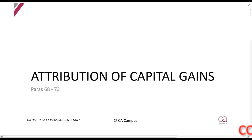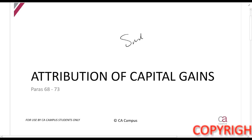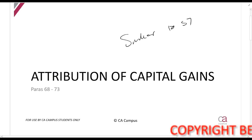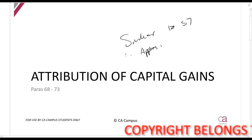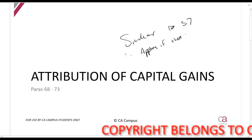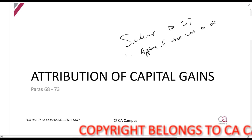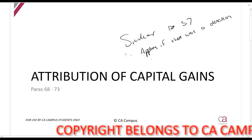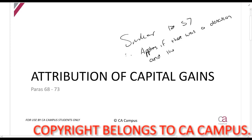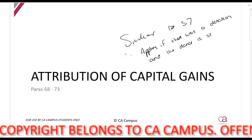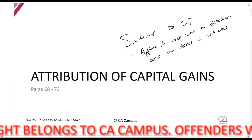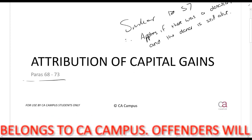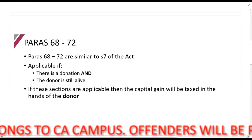We are now going to talk about the attribution of capital gains. This section is similar to section 7 — it applies if there was a donation and the donor is still alive. Please go and make sure that you see what is included and excluded from the syllabus as well.